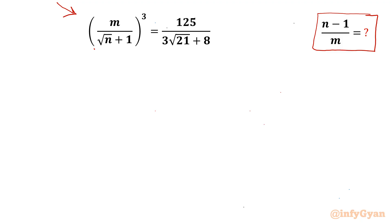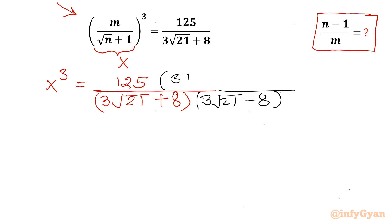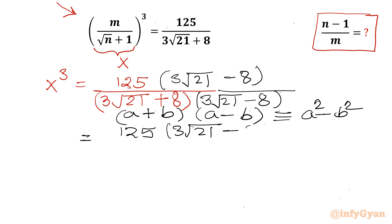Let's get started by setting the bracket m/√(n+1) equal to x. So I will write x³ = 125 divided by (3√21 + 8). Now I will rationalize the denominator by multiplying by (3√21 - 8) in both numerator and denominator. The numerator becomes 125 times (3√21 - 8).